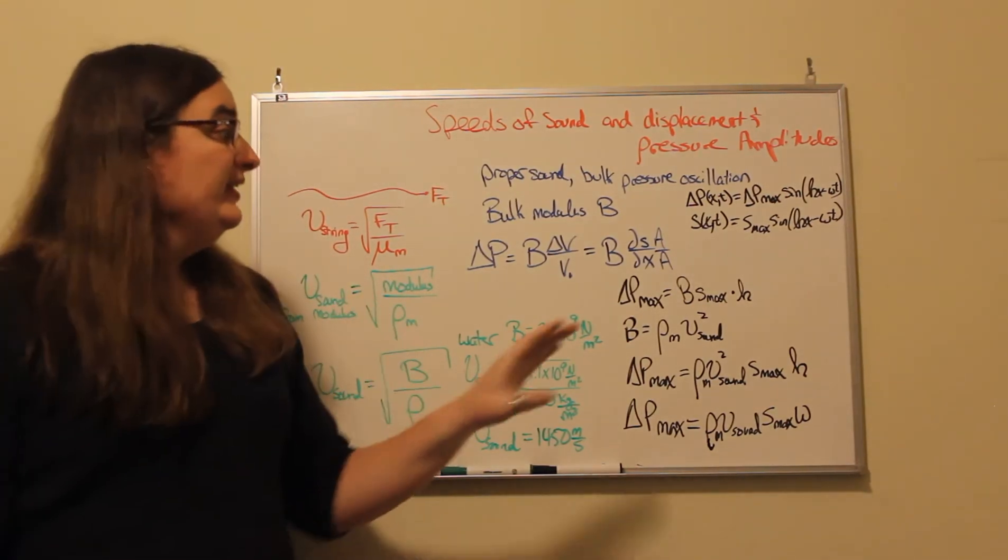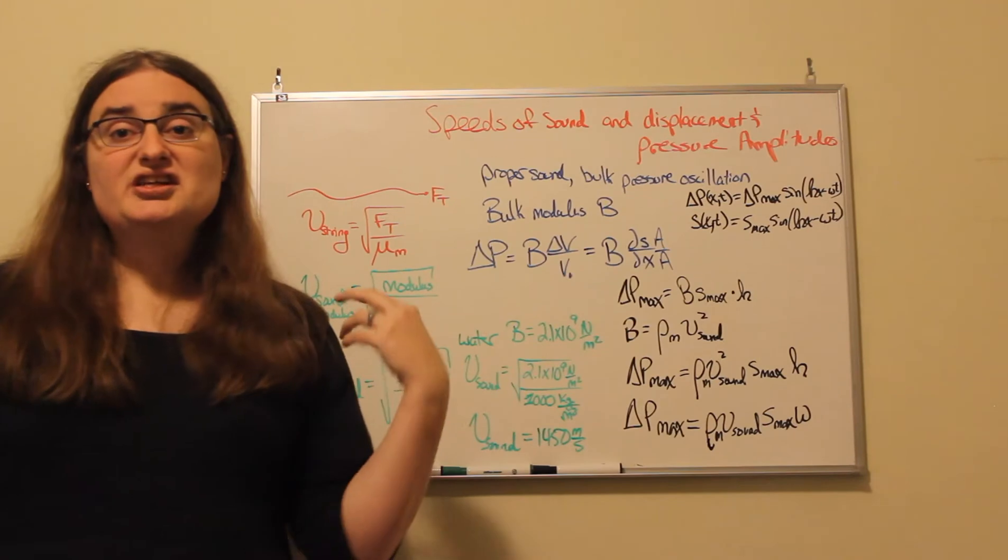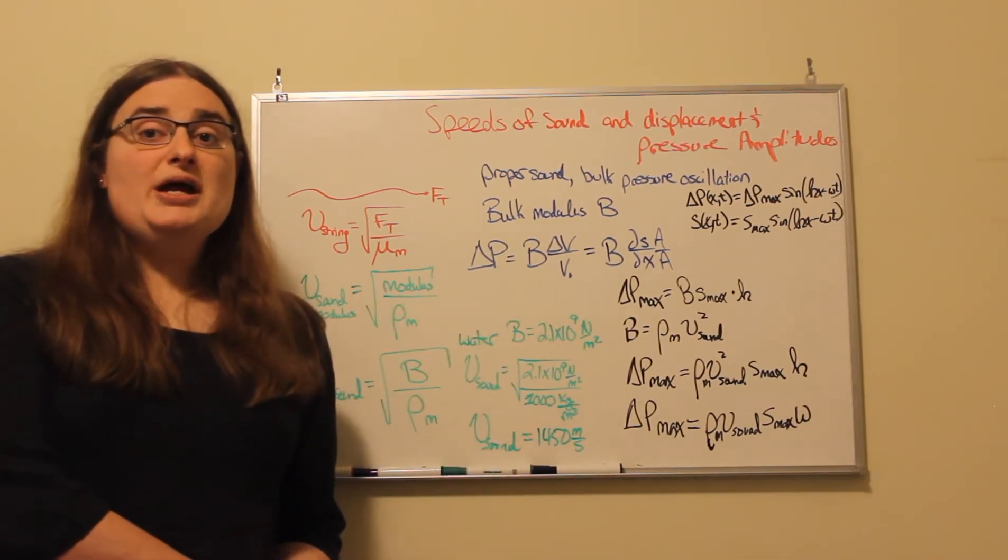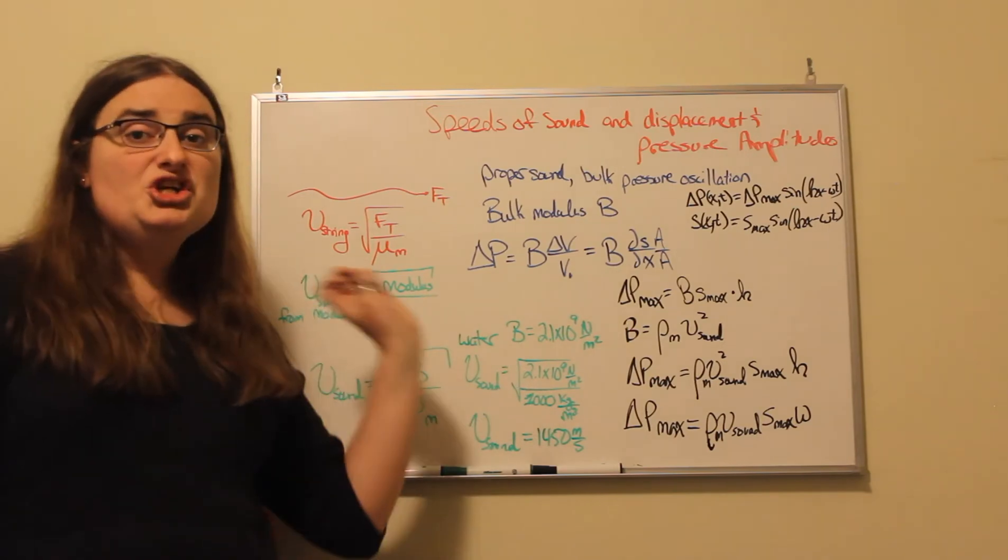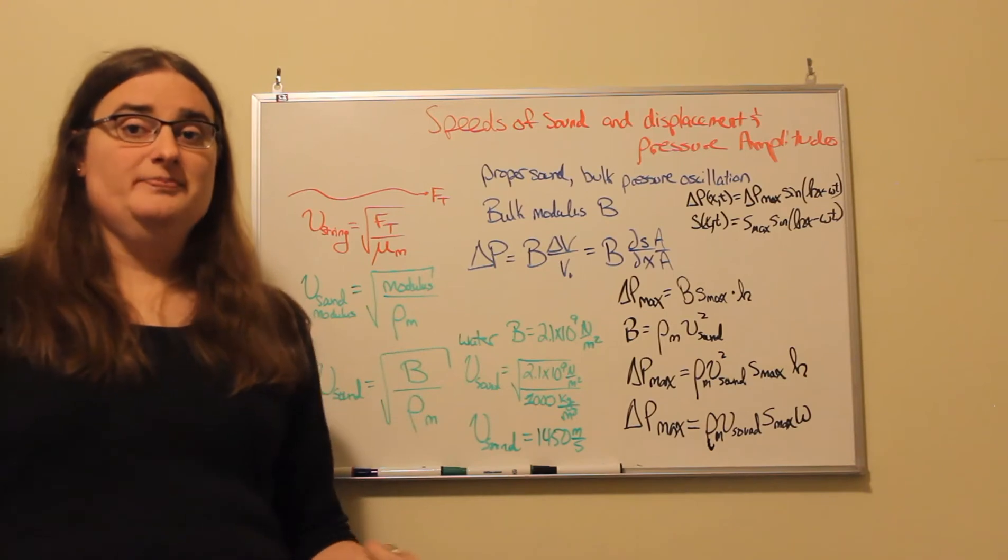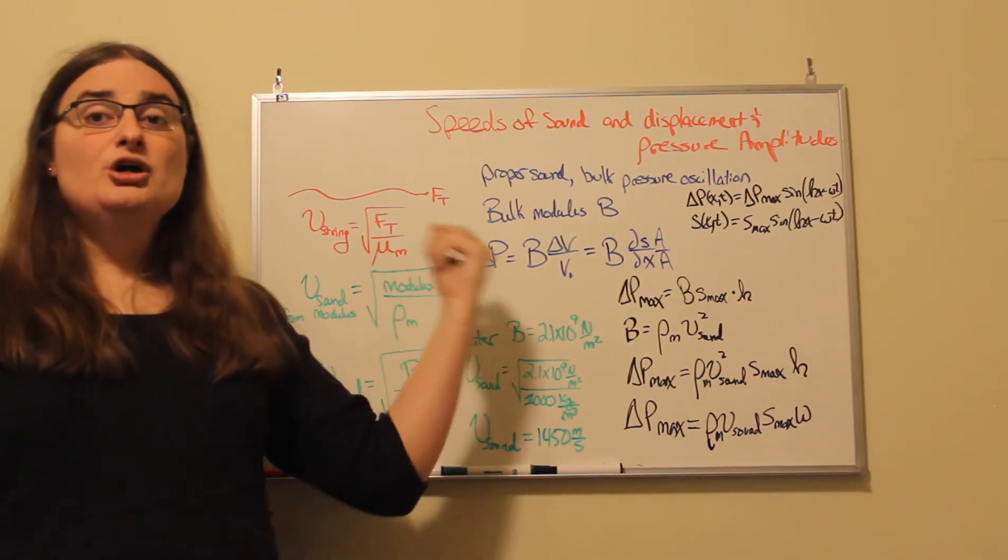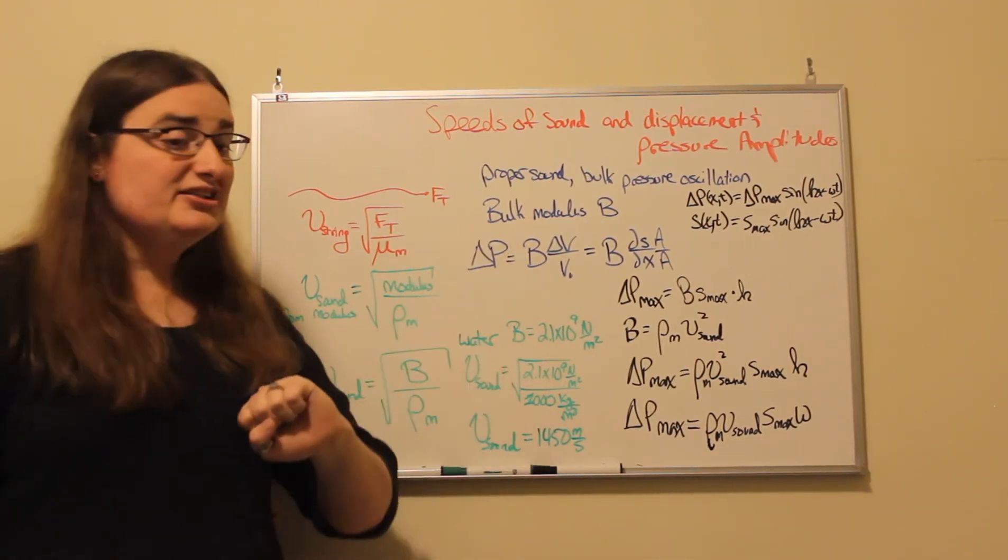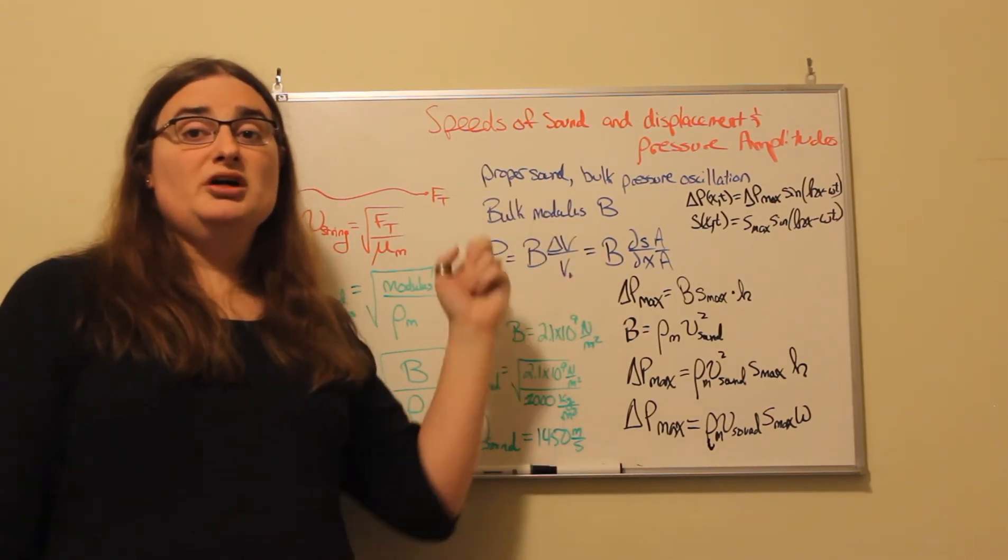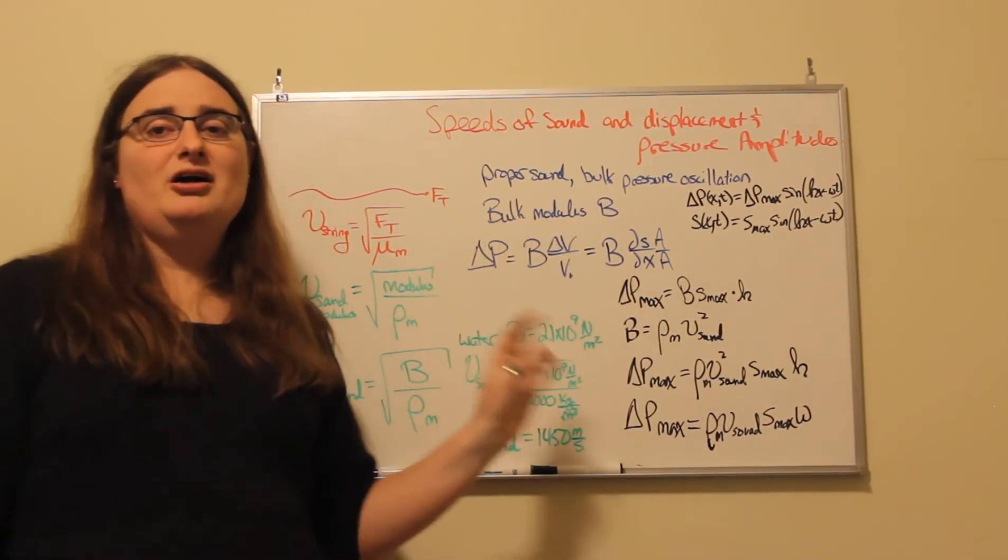Well, the link between these two equations comes from the definition of bulk modulus. Back in chapter 12, we talked about how a change in pressure is related to a volume strain. The change in pressure, which is our stress, is the bulk modulus times the fractional change in volume, our change in volume divided by our original volume.